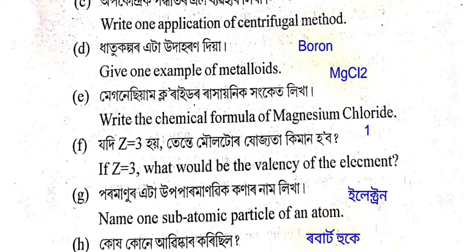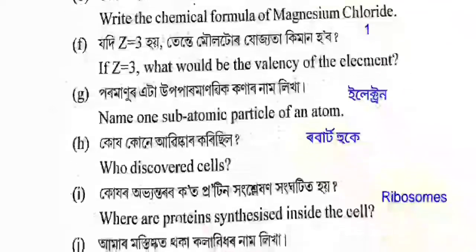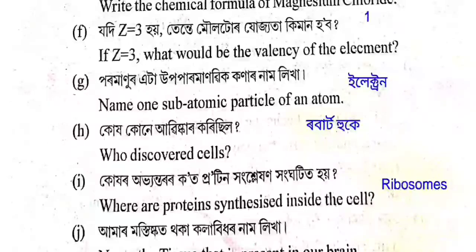Next question: If Z = 3, tente molik zhujyata ki maan? If Z = 3, what will be the valency of the element? The answer is one (1). Paramanu eta upo paramanu vik konar nam likhha — name one subatomic particle of an atom. The answer is electron.